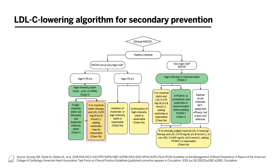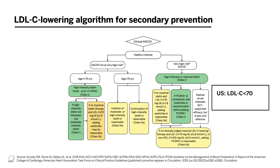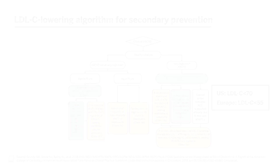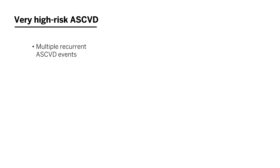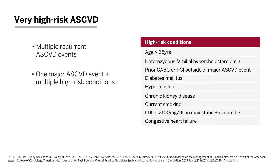There is a key designation of very high risk atherosclerotic cardiovascular disease — patients who would benefit from LDL cholesterol lowering to less than 70 mg/dL in addition to greater than 50 percent reduction. There are some differences across the world: in the U.S. we use less than 70 mg/dL; the European Society of Cardiology uses less than 55 mg/dL. Very high risk ASCVD includes patients at risk for multiple recurrent cardiovascular disease events — those who have had multiple events, or a major event plus multiple high-risk conditions. These individuals may benefit from more costly medicines such as PCSK9 monoclonal antibodies.